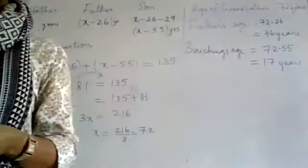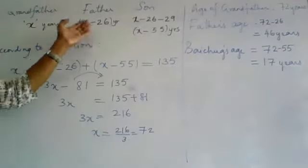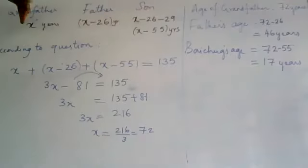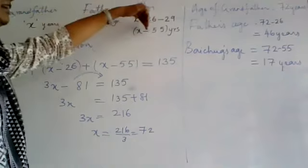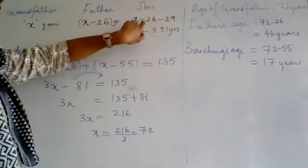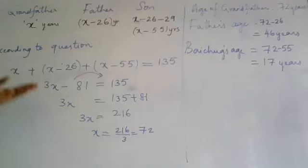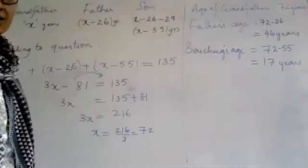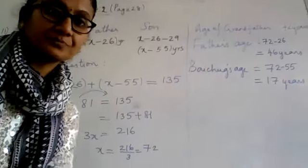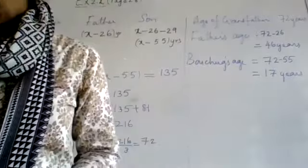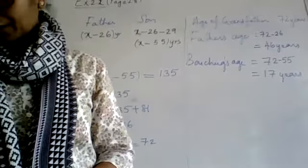So you got all three ages. You should take grandfather, father, and son in descending order and keep on subtracting the ages from the previous person: father 26 years less than grandfather, son 29 years less than father's age. Then with the condition that all ages sum to 135, solve the equation to get the three ages. I hope that is clear.